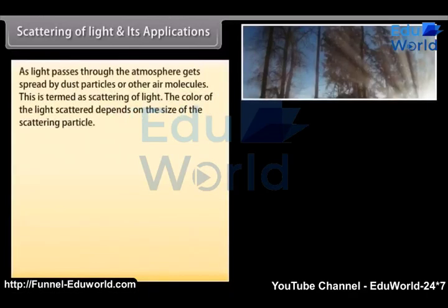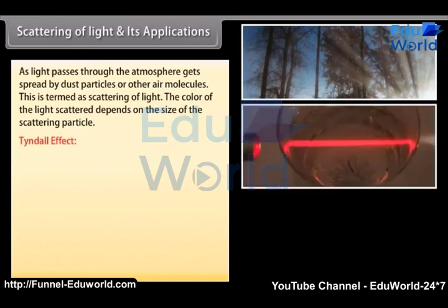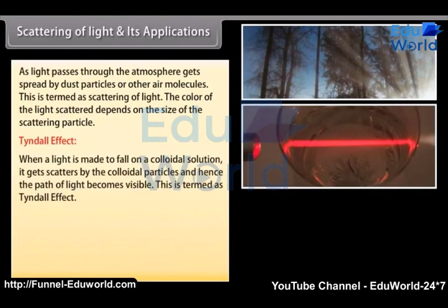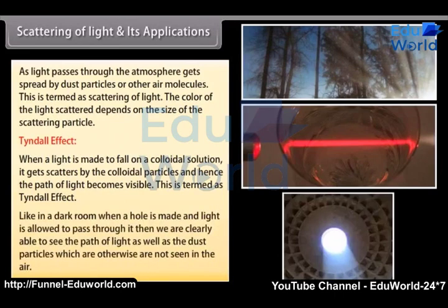Scattering of light. As light passes through the atmosphere, it gets spread by dust particles or other air molecules. This is termed as scattering of light. The color of light scattered depends on the size of the scattering particle. When light is made to fall on a colloidal solution, it gets scattered by the colloidal particles and hence the path of light becomes visible — this is termed as the Tyndall effect. For example, in a dark room, when a hole is made and light is allowed to pass through it, we can clearly see the path of light as well as the dust particles.